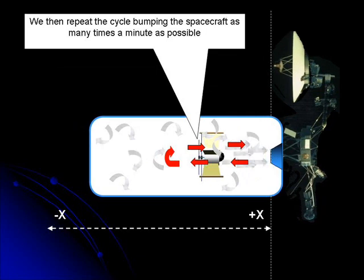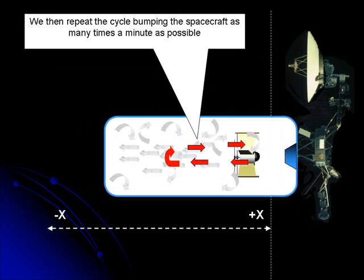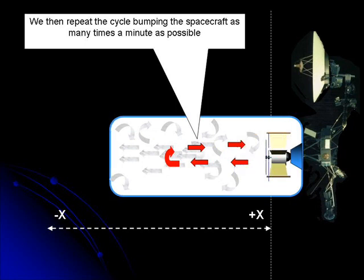We then repeat the cycle, bumping the spacecraft forward as many times a minute as possible.